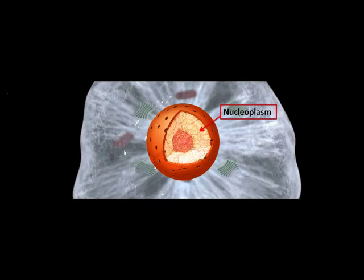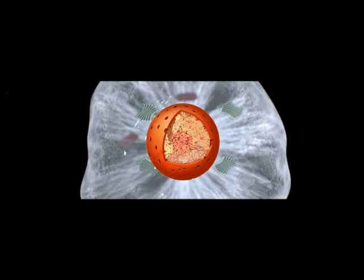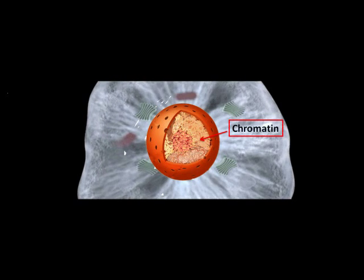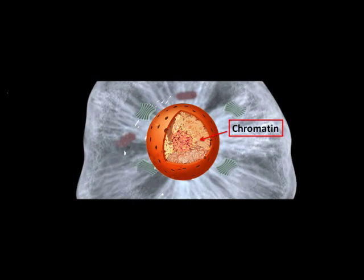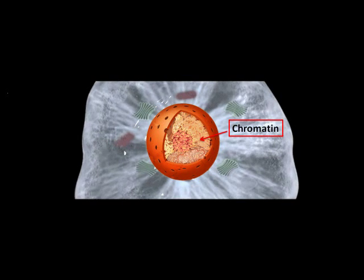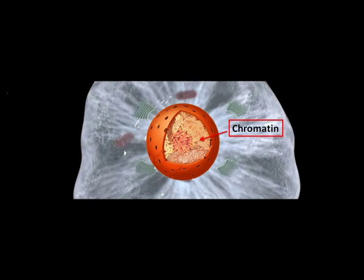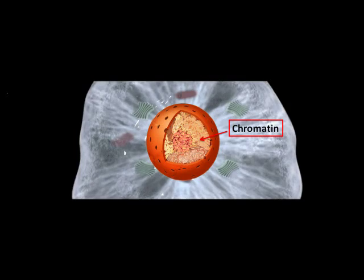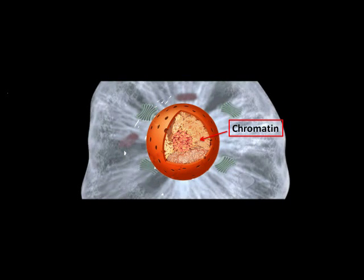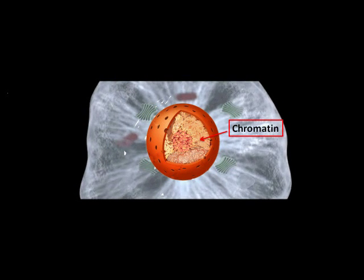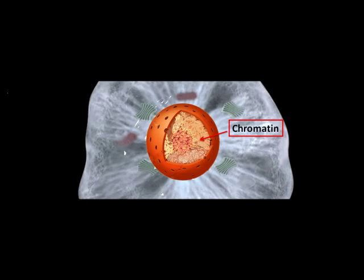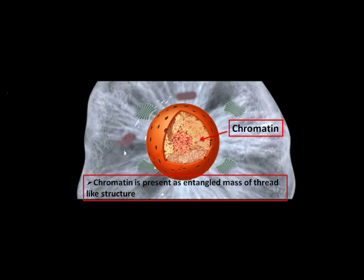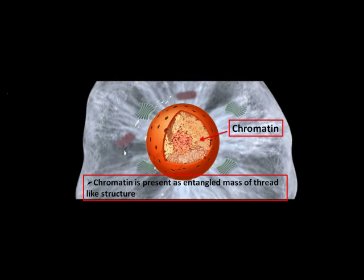We now move on to chromatin material. You see the color change? This is chromatin material. Chromatin material is a thin thread-like structure and is made up of DNA and protein. During cell division, it becomes highly condensed and changes to chromosomes.